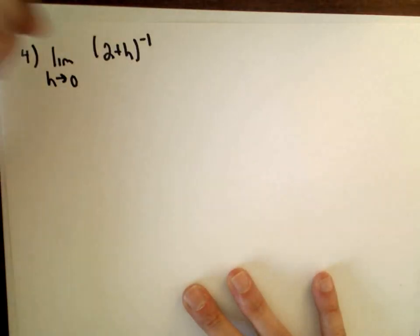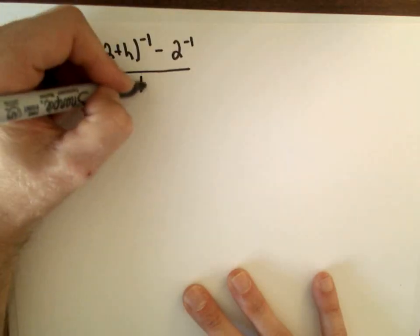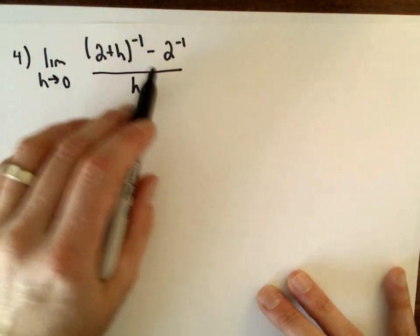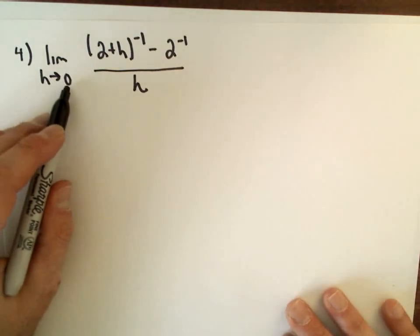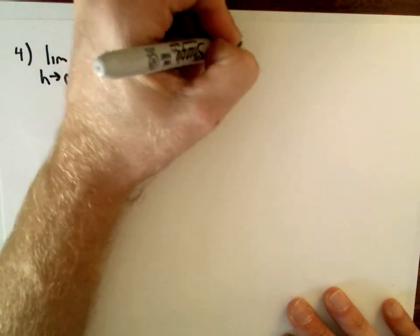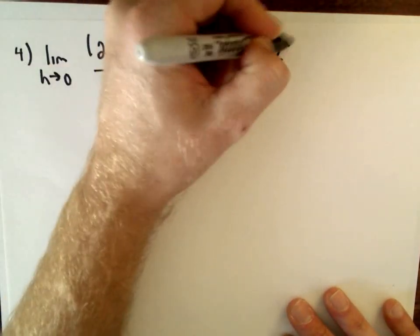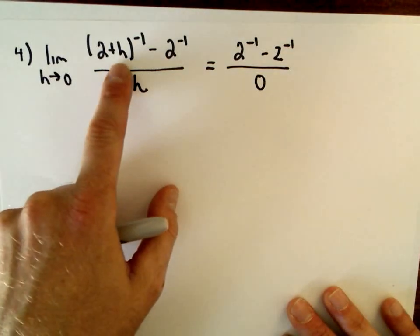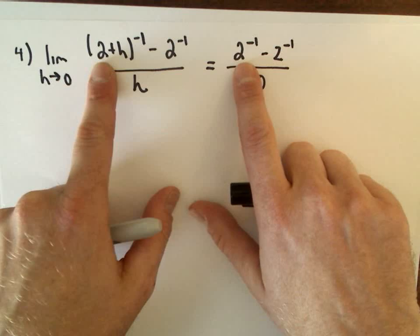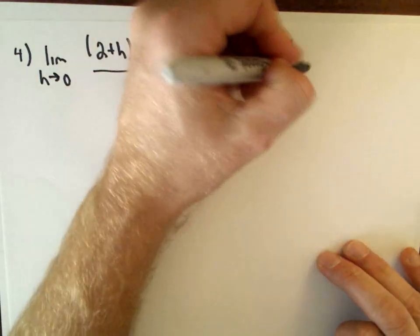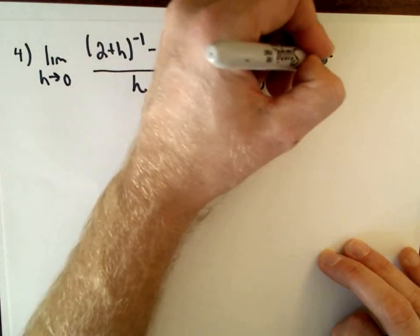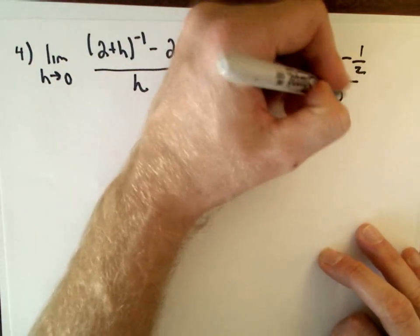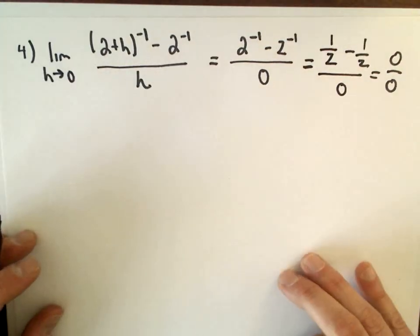This is one that I've definitely seen throw some people off. The limit as h approaches zero of (2+h) raised to the negative first power minus 2 raised to the negative first power, all over h. People don't like the negative exponent — it makes them a little nervous. So the first thing: let's substitute h equals zero. If we put in h equals zero, we'll have 2 to the negative first minus 2 to the negative first over zero. Two to the negative one is one half, so we're getting zero over zero, which tells me there's probably some work to do.